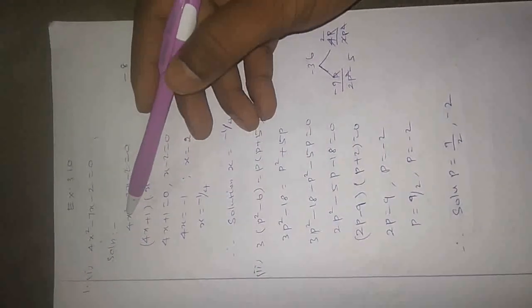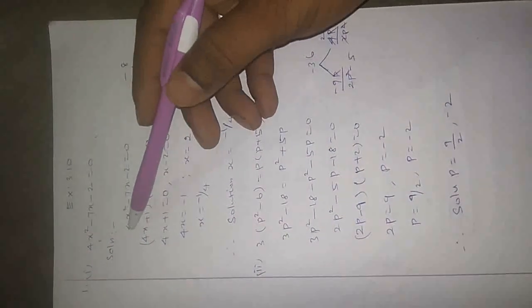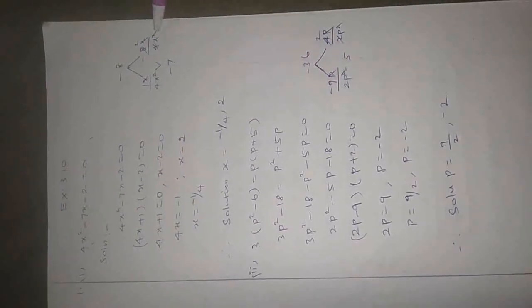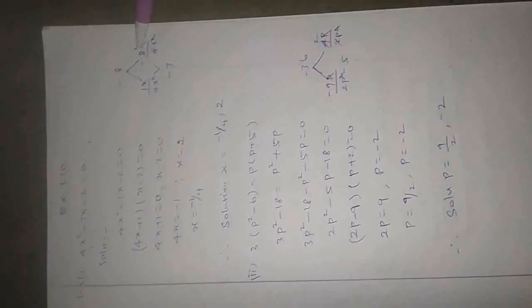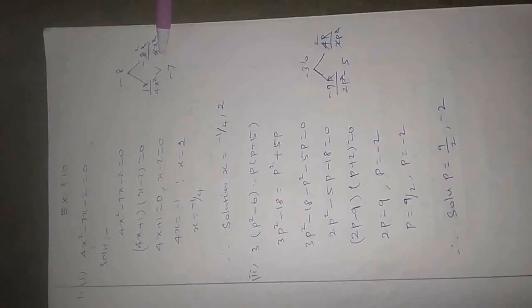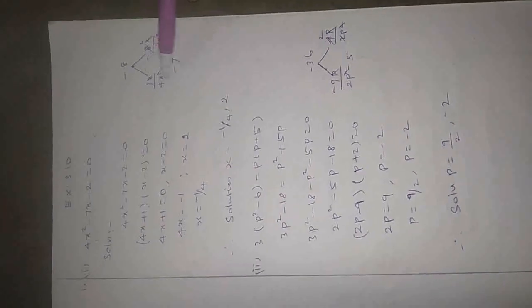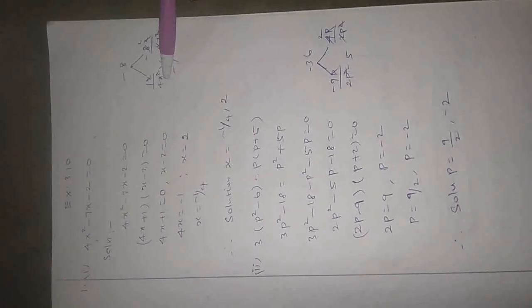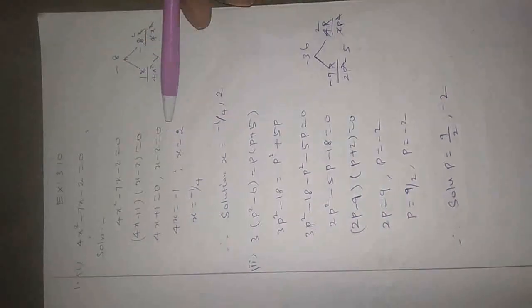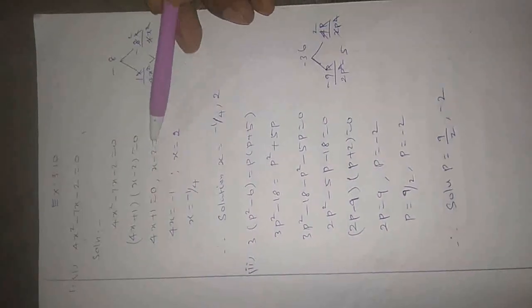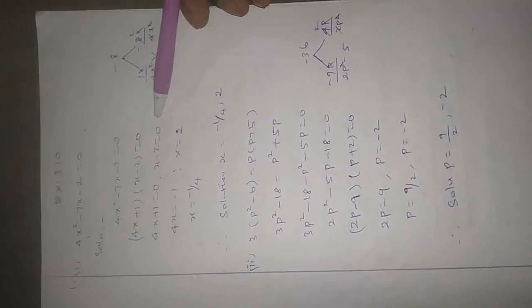The x squared coefficient is 4. Divide: 4x squared divided by 4x squared. x×x cancel. 1 four is 4, 2 fours are 8. x×x cancel. So 4x plus 1 equals 0, and x minus 2 equals 0.